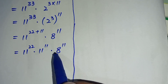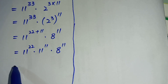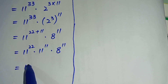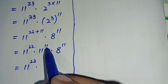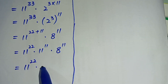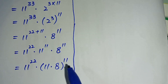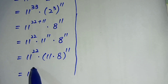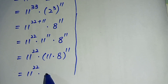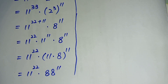Now these two numbers have the same power, so we will take the power common from both numbers and multiply the bases. We write this as 11 multiplied by 8, whole to the power 11. Further it becomes 11 to the power 22 multiplied by 88 to the power 11, since 11 times 8 is 88.